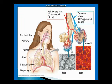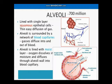Alveolar ducts open into alveoli, which are balloon-like structures and the actual place where gaseous exchange occurs. We can see a rich supply of blood capillaries surrounding each alveolus. There are over 700 million alveoli in the lungs. The lining of the alveolus is moist squamous epithelium, consisting of very thin flat cells.